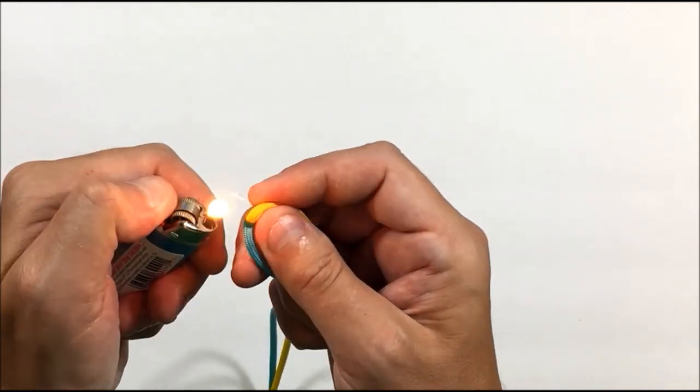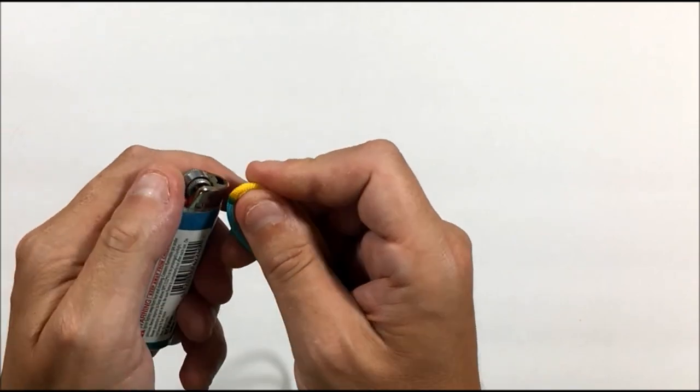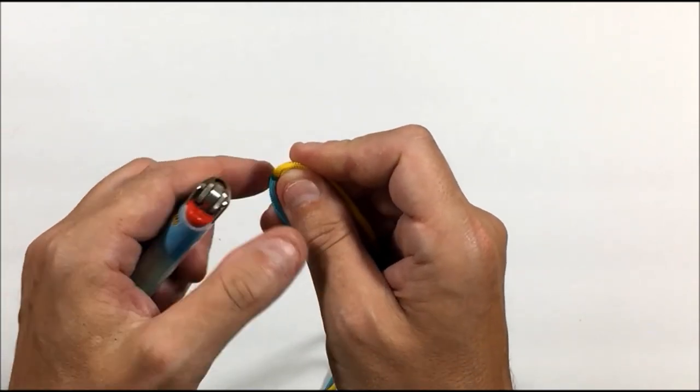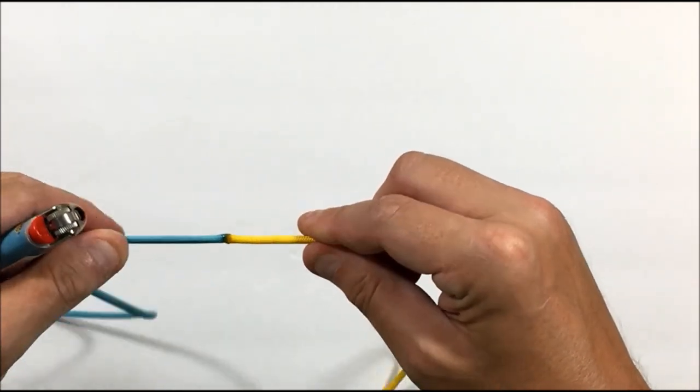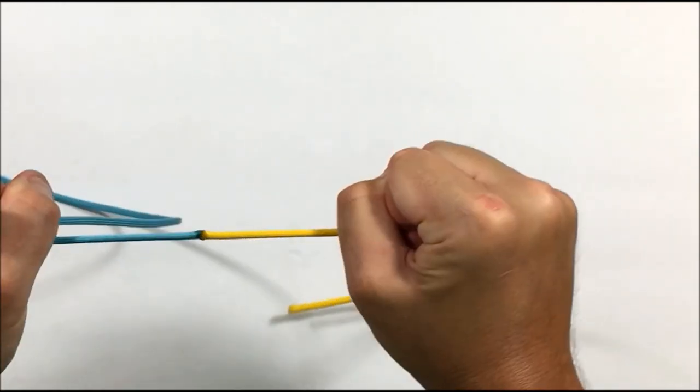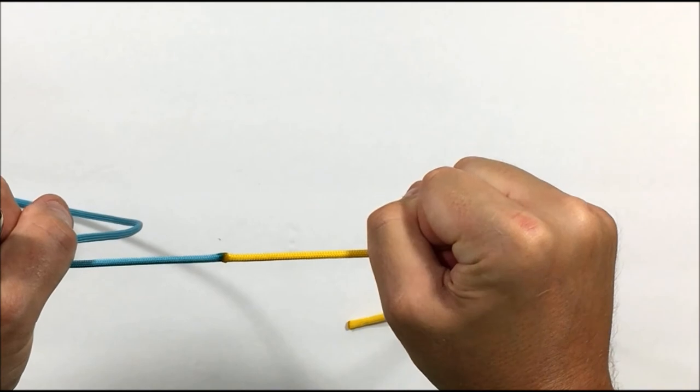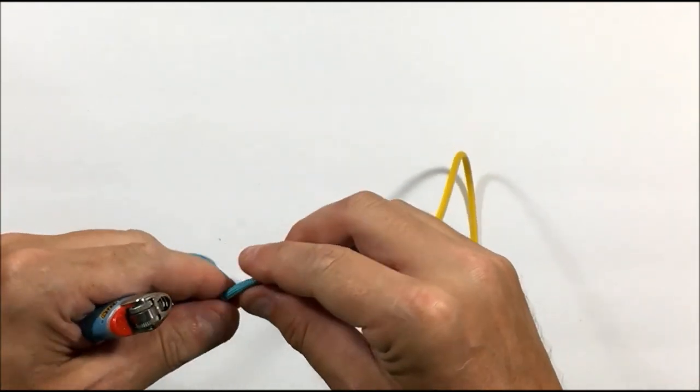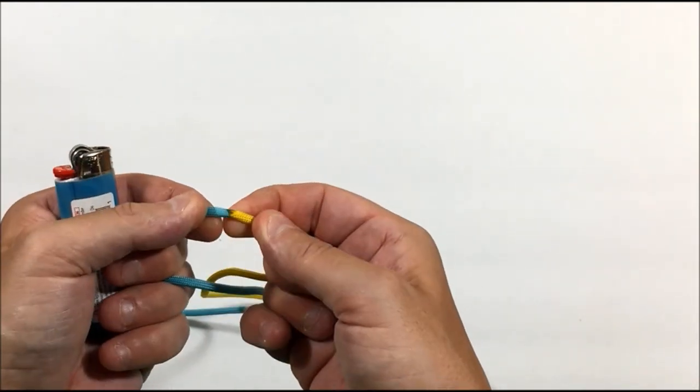The longer you do it, the stronger it gets. Just be sure and not leave the lighter on it too long in one section. And that is about it. That will not come apart, and you are ready to hide it. It's easily hidden under any knot that you could tie.